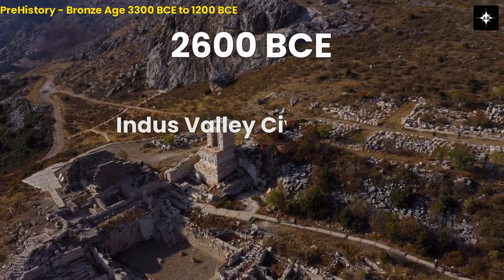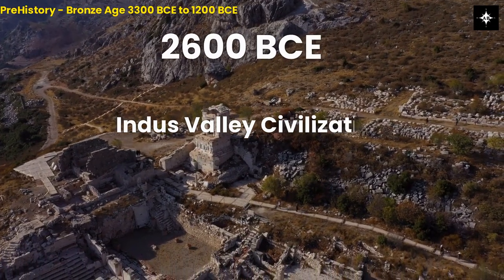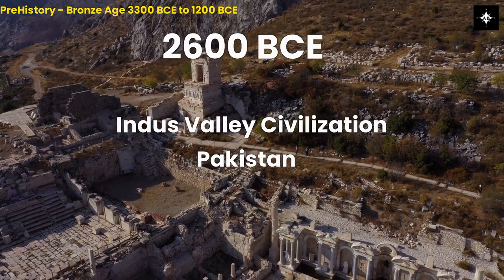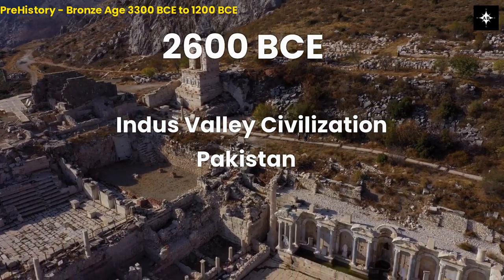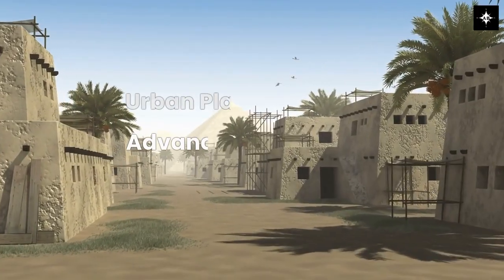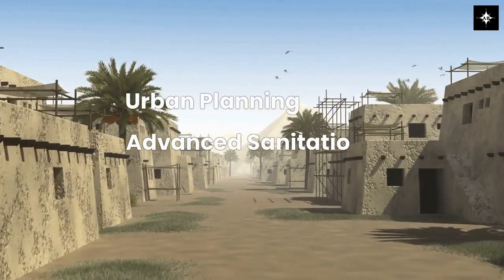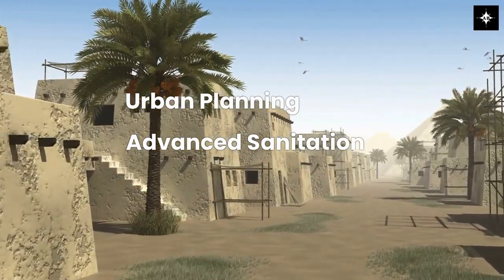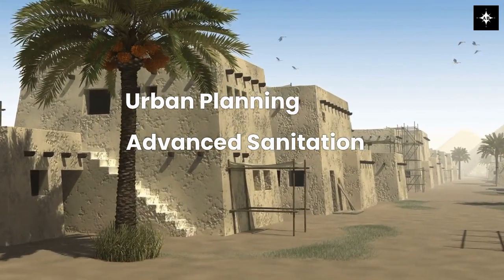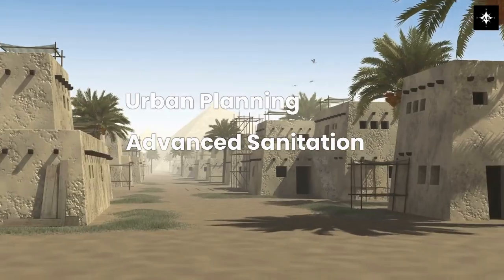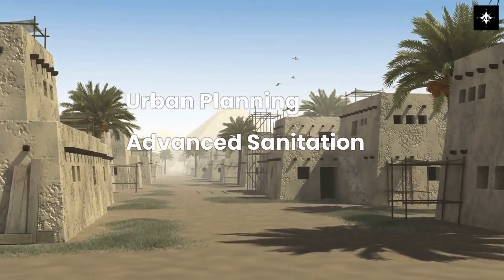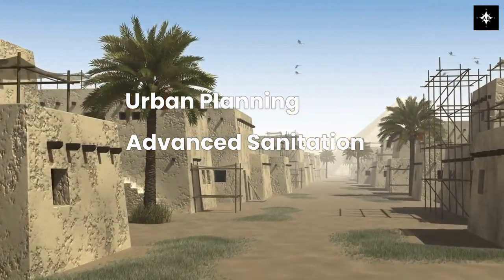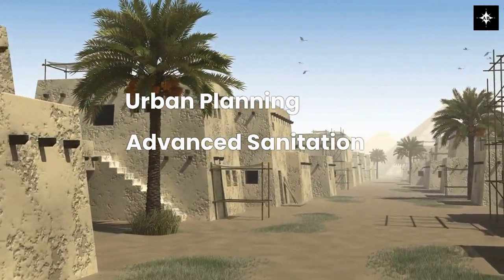Third, around 2600 BCE, the Indus Valley Civilization in modern-day Pakistan. Despite its impressive achievements such as urban planning, advanced sanitation systems, and intricate trade, the Indus Valley Civilization ultimately declined and disappeared, leaving behind a rich cultural legacy that continues to fascinate scholars and the general public alike.